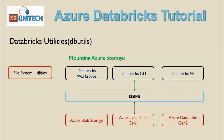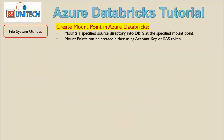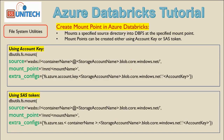Here we will be creating connections using Azure Blob Storage. The mount point can be created either using the account key or SAS token. In this video we will be covering both. First we will see how to create it using the account key, and second using the SAS token. The command used is dbutils.fs.mount.